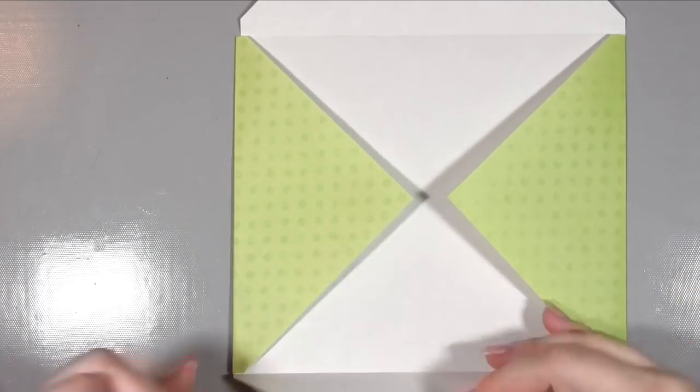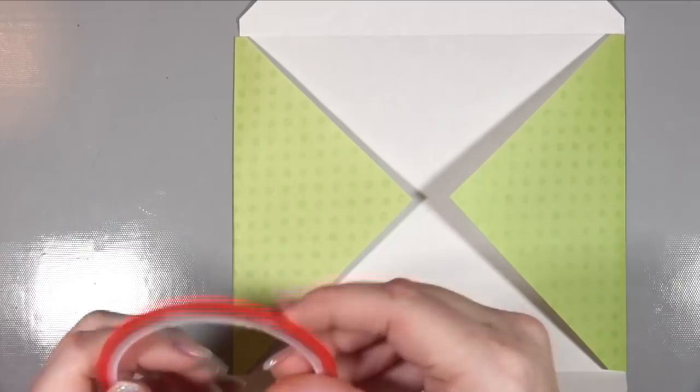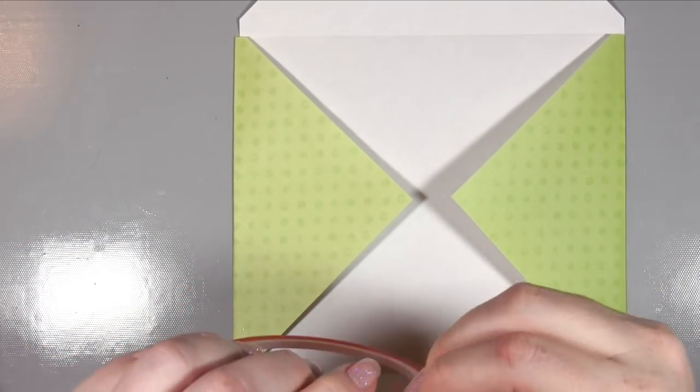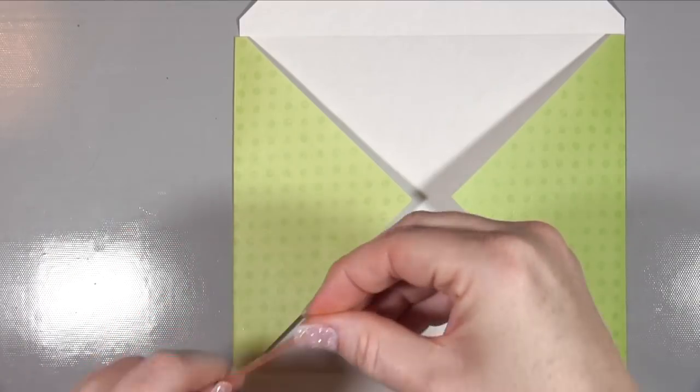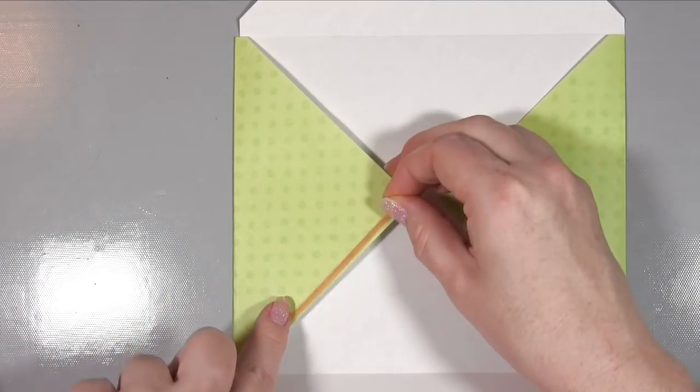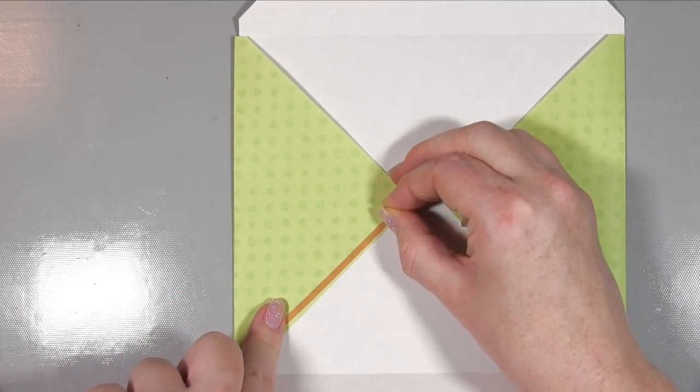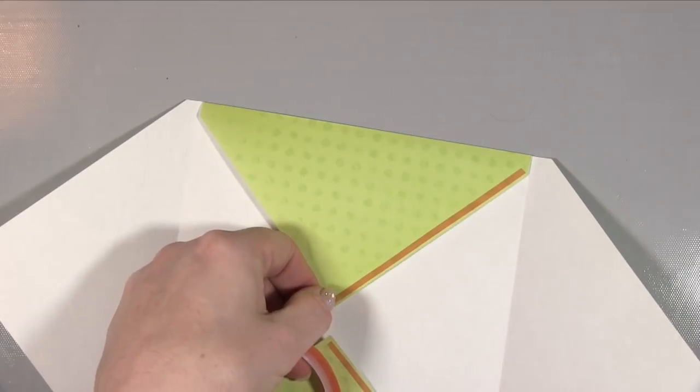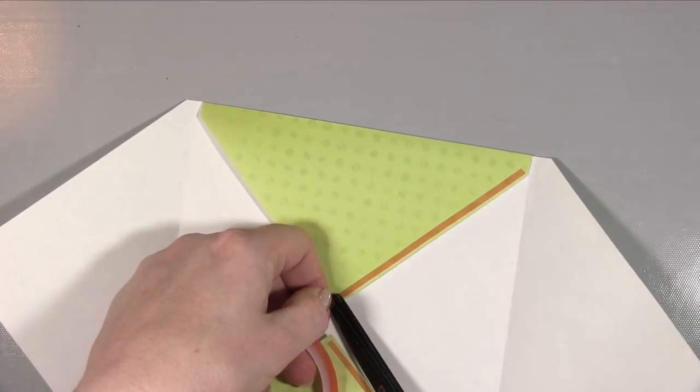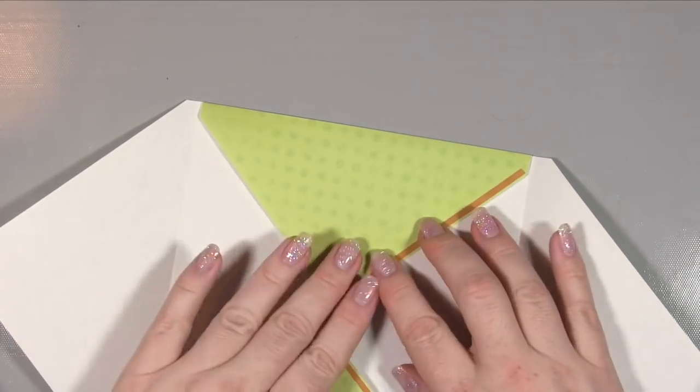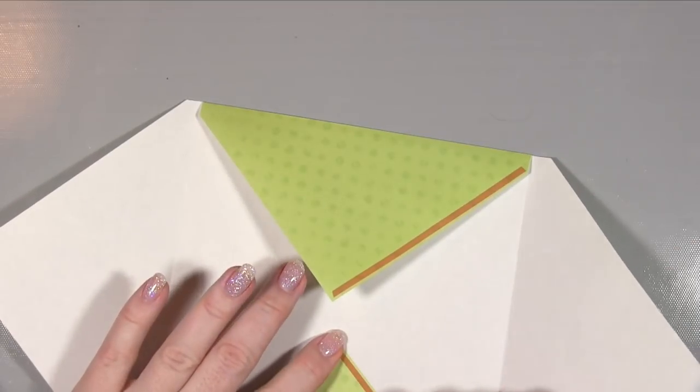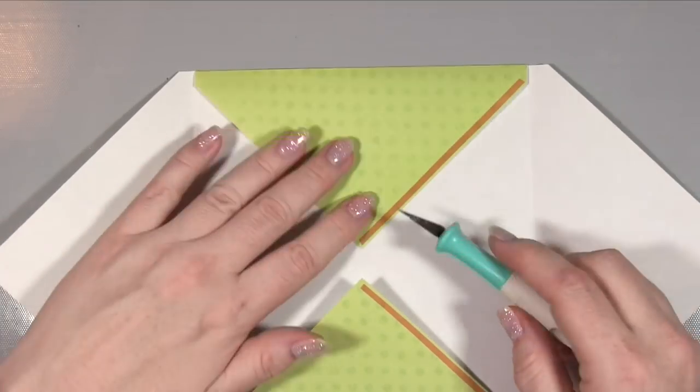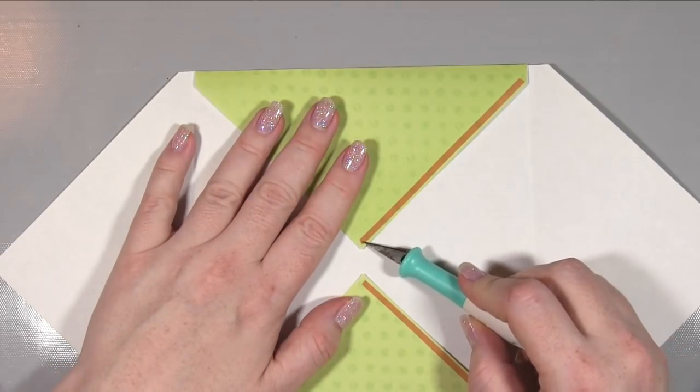The next thing we need to do is stick our envelope together. You want to use something that's pretty decent and will stay stuck because you don't want your envelope coming apart in the post. I'm using this very thin red liner tape. It's really strong and will hold this envelope together nicely. I'm putting two pieces on the two flaps rather than onto the one flap that you're going to put down onto the two.